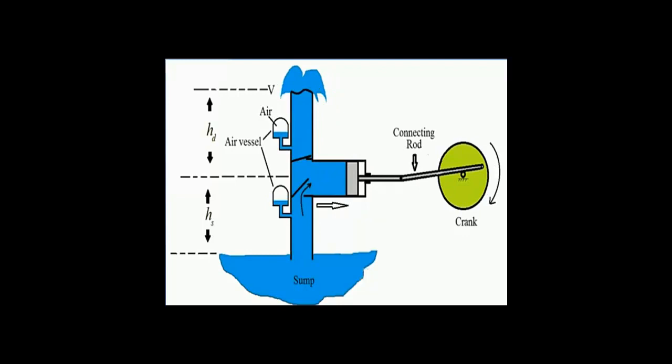When the suction stroke is repeated, the piston moves from inner dead center to outer dead center and the suction valve is opened. Water enters into the cylinder and pressure falls, so water from the air vessel also flows into the cylinder. At this time the delivery valve is closed. The water that was filled into the air vessel during the delivery stroke — which was at the higher level — now makes a reverse flow direction because air pressure acts on it, making the flow through the delivery pipe to the reservoir continuous.